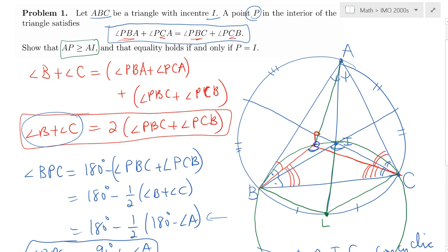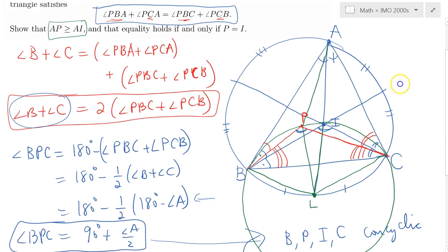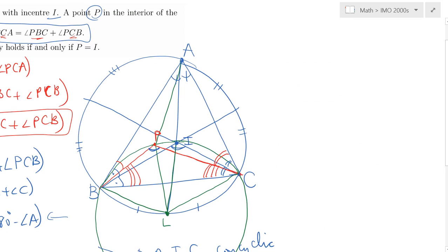Now finally we are to show that AP is greater than or equal to AI. For that, I recommend you focus your attention on triangle APL. If we apply the triangle inequality on that triangle, on triangle APL, we would have AP plus PL greater than or equal to AL.